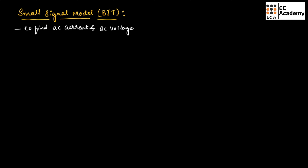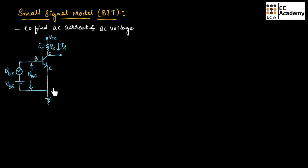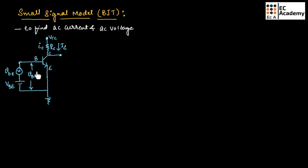Let us consider the circuit. In this circuit, as you can see, we have connected both AC as well as DC signal. Here you need to remember that AC signals are represented by small letters and DC signals are represented by capital letters. So small VBE is the AC signal, capital VBE is the DC signal, and small V capital BE represents the total voltage.